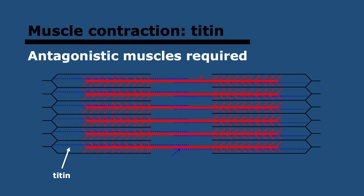Titin is the largest polypeptide discovered to date, and it is very elastic. It connects myosin to the Z-disc and holds it in the correct position, preventing overstretching of the sarcomere. It also importantly adds to the force of contraction by releasing energy when it recoils. Titin can stretch, which serves to lengthen — that is, relax — a muscle. But when it recoils back to its original shape, it provides energy for contracting. For it to stretch in the first place, it needs energy, and that is provided by the antagonist muscle.